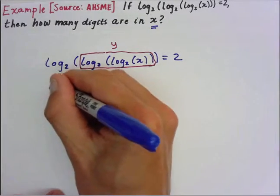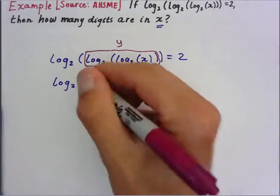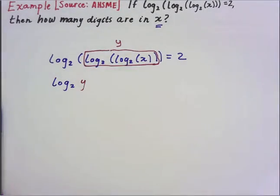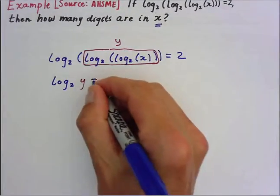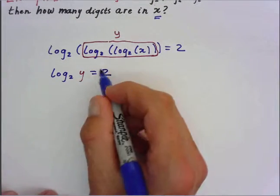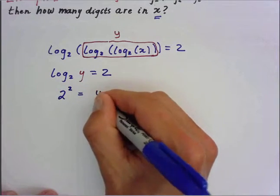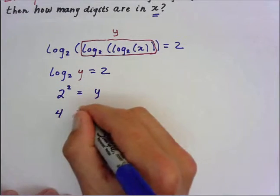So we're going to have log base 2 of y equals 2. Now, by definition, we know that 2 squared equals y. So that means 4 equals y.